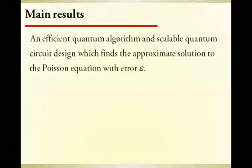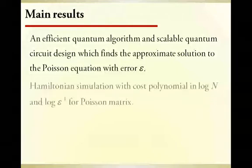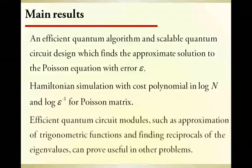In summary, the main results of the paper include an efficient quantum algorithm and scalable quantum circuit design which finds the approximate solution to the Poisson equation with error epsilon. It is an open problem to determine if or when a Hamiltonian can be simulated with cost scaling that is polylogarithmic in both the matrix size and inverse error. We show that this is possible for Poisson matrix. Furthermore, in this paper we provide efficient quantum circuit modules which can be useful in other problems.